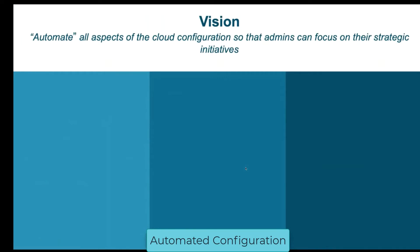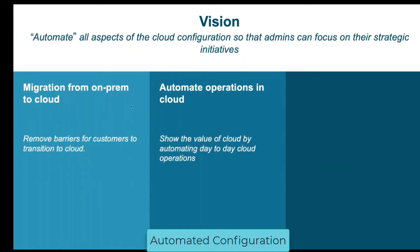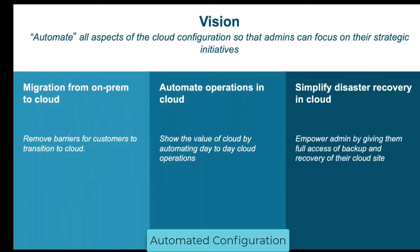Our vision with automated configuration is to automate all aspects of cloud configuration so that admins can really focus on their strategic initiatives rather than doing manual toil. We want to start with migration from on-prem to cloud so that customers can migrate and remove any barriers they face when transitioning. The second aspect is to automate all operations in cloud, and the third is simplifying disaster recovery, empowering admins to have complete control of their backup and recovery of the cloud side.